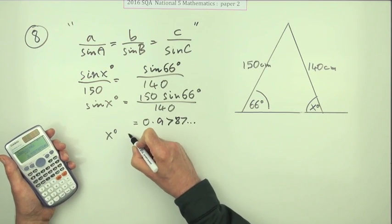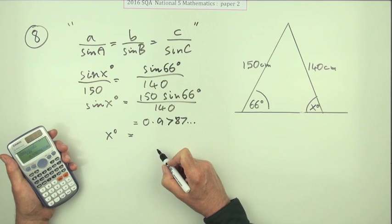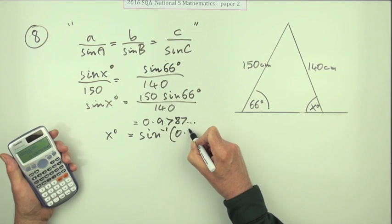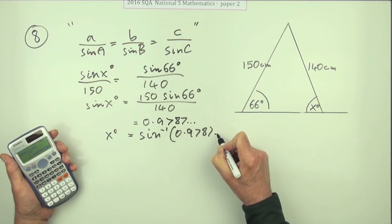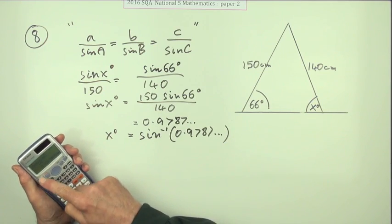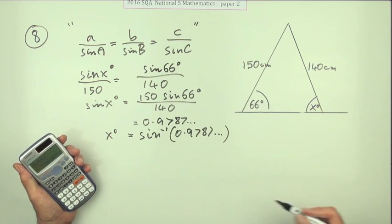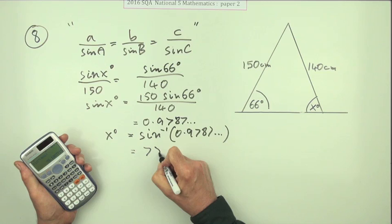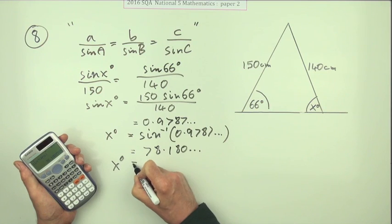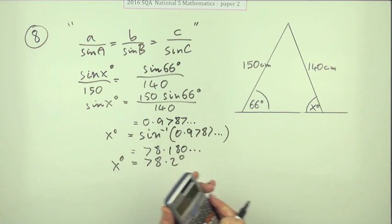Which means that X itself, notice I'm keeping all these degree signs in, is inverse sine of that 0.9787 and so on. Just using the answer. That's why I'm not rounding it off. So if I just do, you get 78.180 and so on. So I'll finish off by saying that angle is 78.2 degrees.